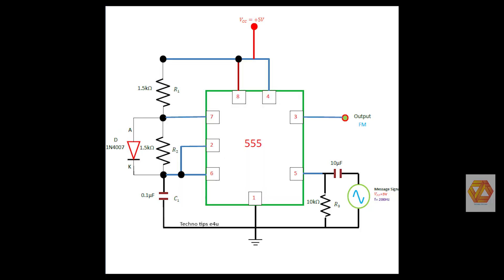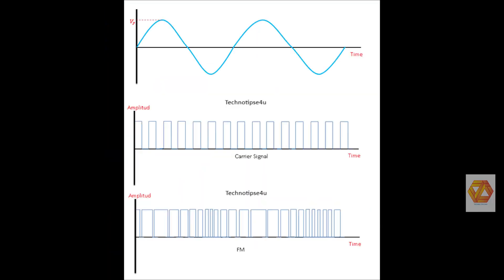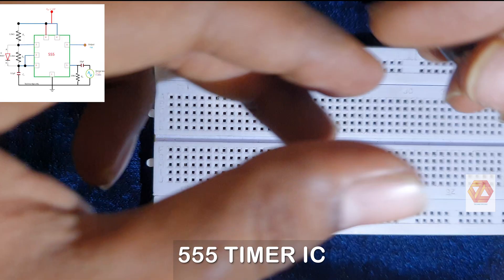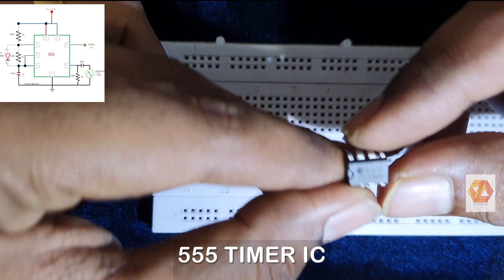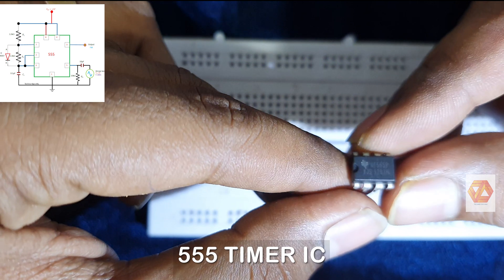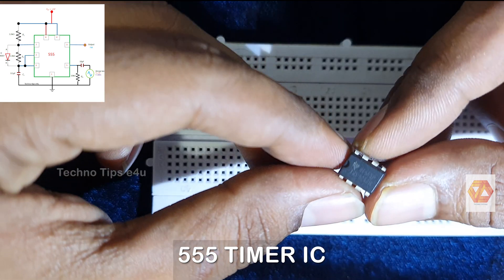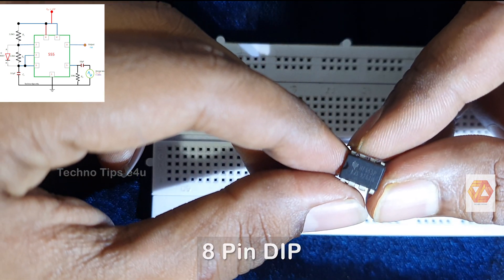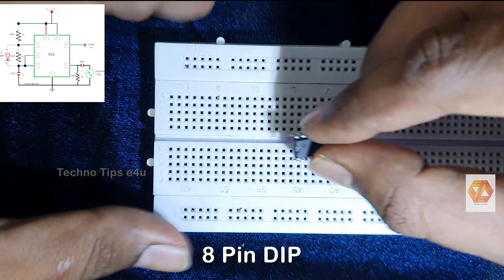This is the circuit diagram of a 555 FM generator, showing the input and output waveforms. In order to make a 555 FM generator, we need a 555 timer IC. This is a 555 timer IC in a dual inline package.